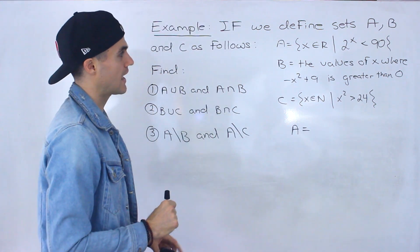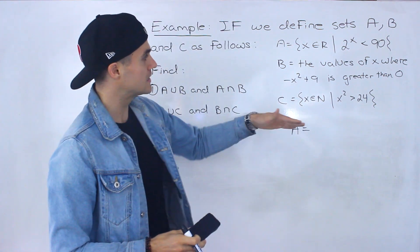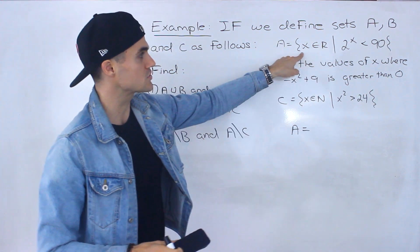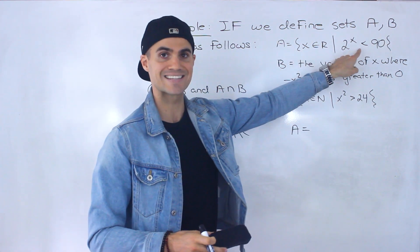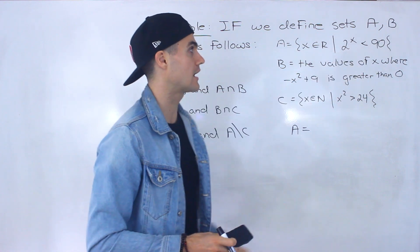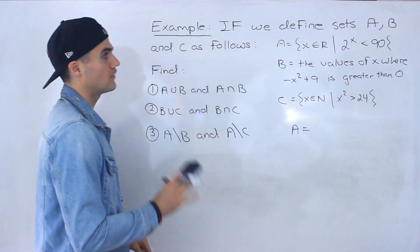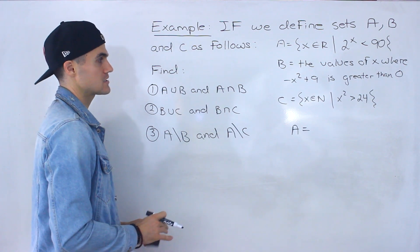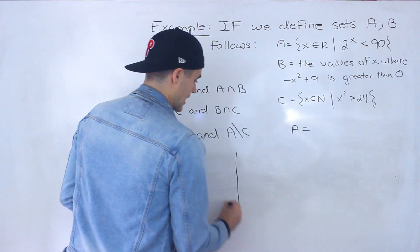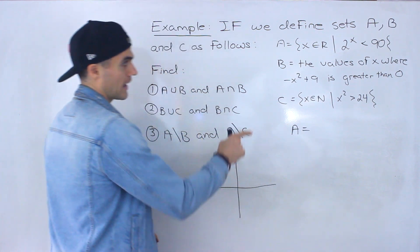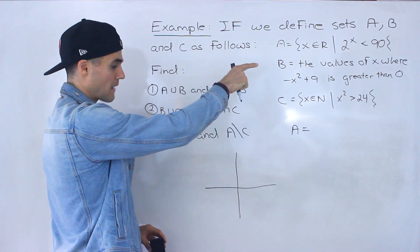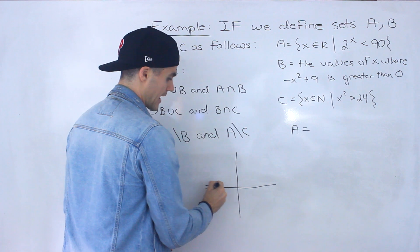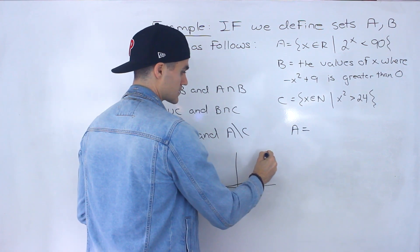Starting with set A, we're told that set A is basically all the x values — all the real numbers where 2 to the power of x is less than 90. So all the real numbers where 2 to the power of x is less than 90. To help visualize this, what we can actually do is graph 2 to the power of x first. So 2 to the power of x is just an exponential function that looks like that.